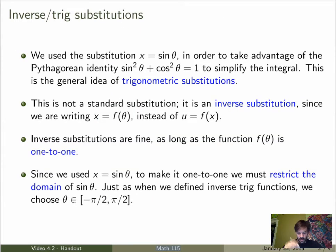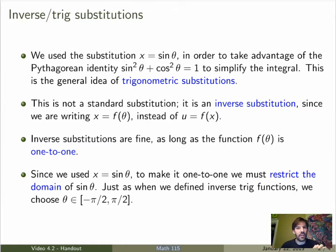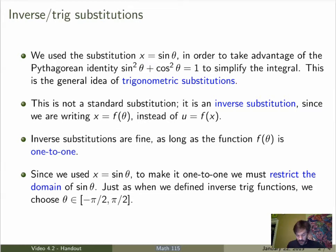The idea is to use a substitution where we set x equal to a trig function — in this case sinθ — in order to take advantage of the identity sin²θ + cos²θ = 1. This is an inverse substitution: instead of writing u as a function of x, we write x as a function of θ. The only subtlety is we must ensure the function f(θ) is one-to-one. Since sinθ is not one-to-one, we restrict θ to the interval from −π/2 to π/2.